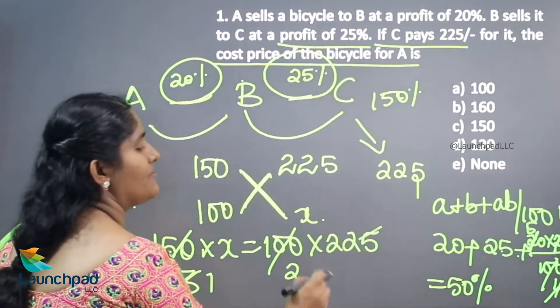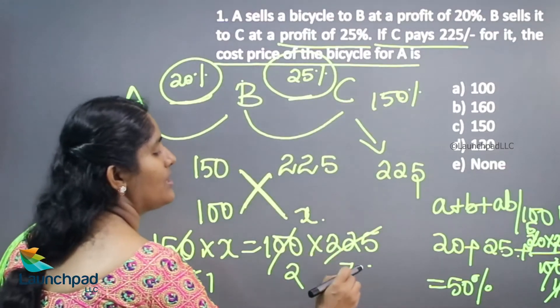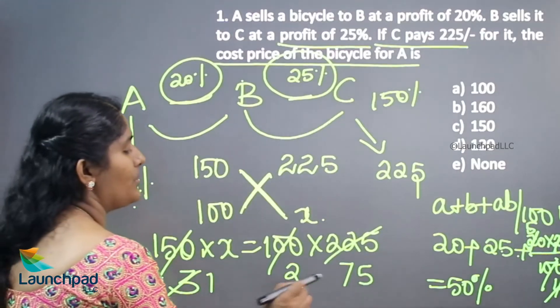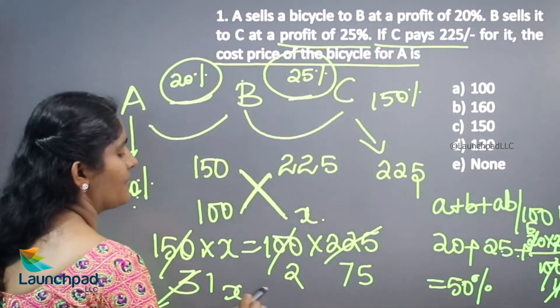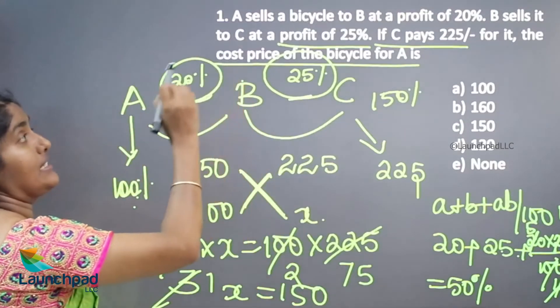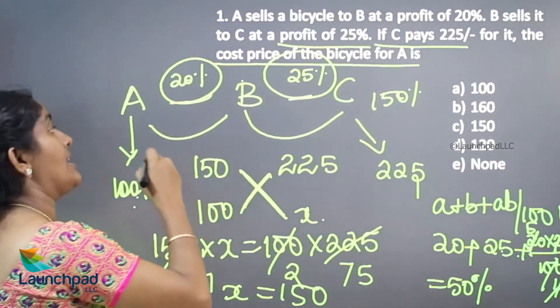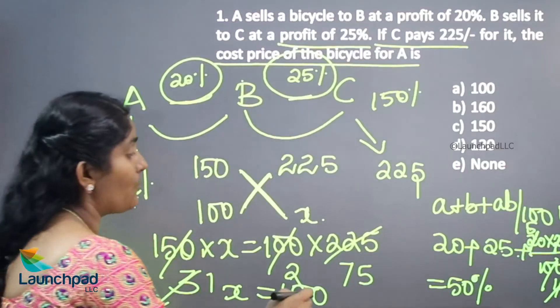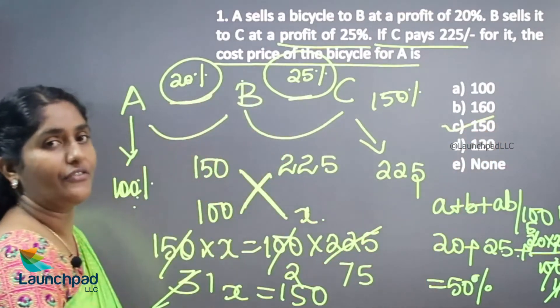1, 3's are 3. 7, 3's are 21. 5, 3's are 50. 2 into 75. 150 rupees. Initially A's sales to B, that is A's paying amount is 150 rupees. Your answer is 150.